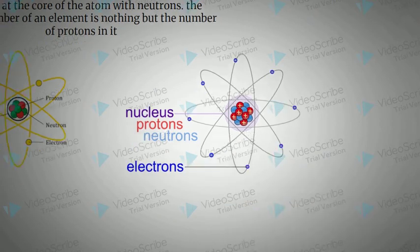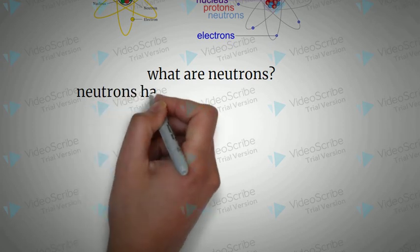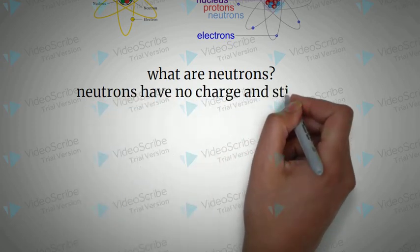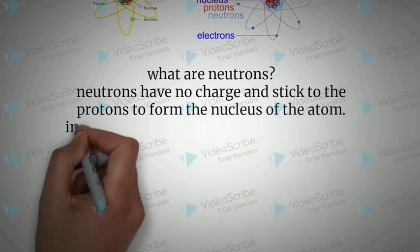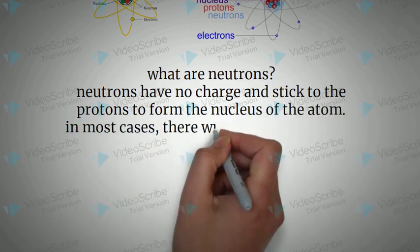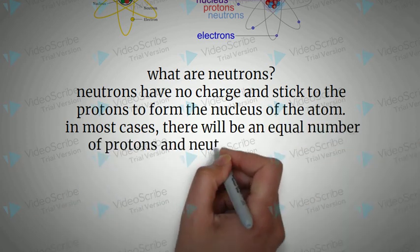The image is very clear. Now, what are neutrons? Neutrons have no charge and stick to the protons to form the nucleus of the atom.